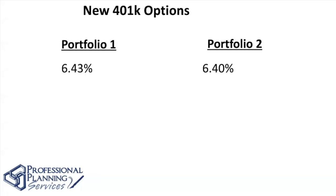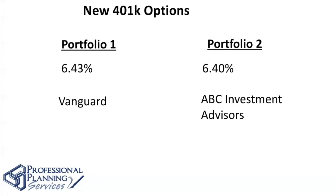Logic would dictate with this limited information, we would put it in Portfolio One with the higher rate of return. Almost 100% of people say 6.43%. Now let me add another piece of information. Portfolio Manager of Portfolio One was a little-known company called Vanguard — well-known, and you cannot find anything negative said about John Bogle or Vanguard. Portfolio Two is managed by a fictitious firm called ABC Investment Advisors. Based on this additional information, people logically pick Portfolio One.